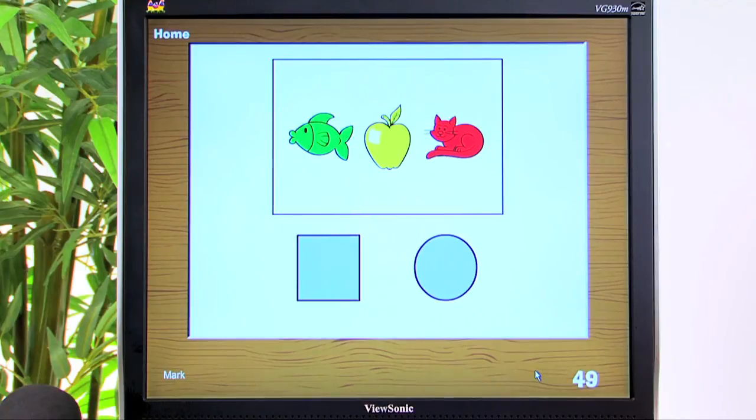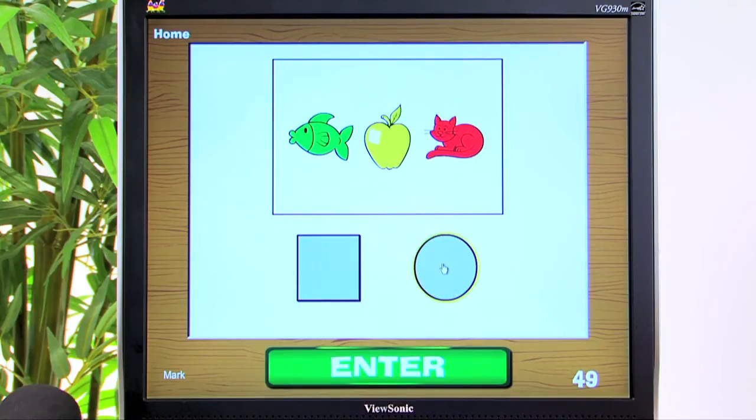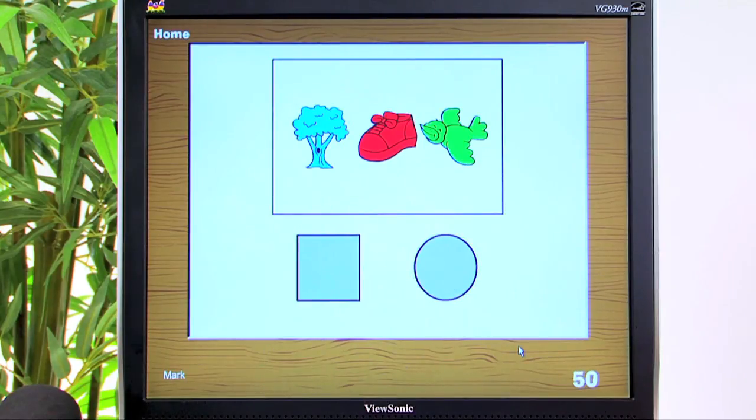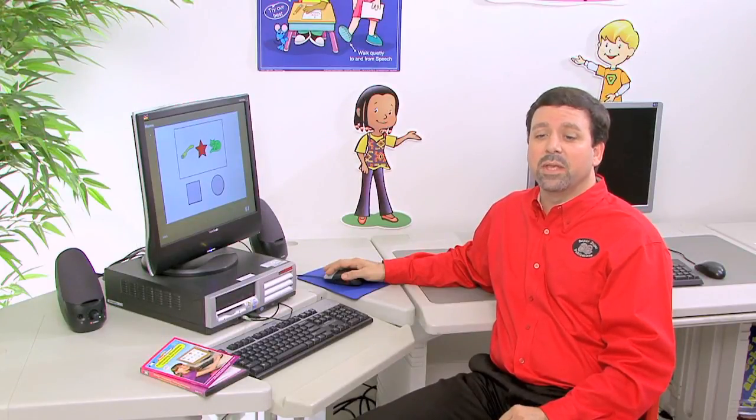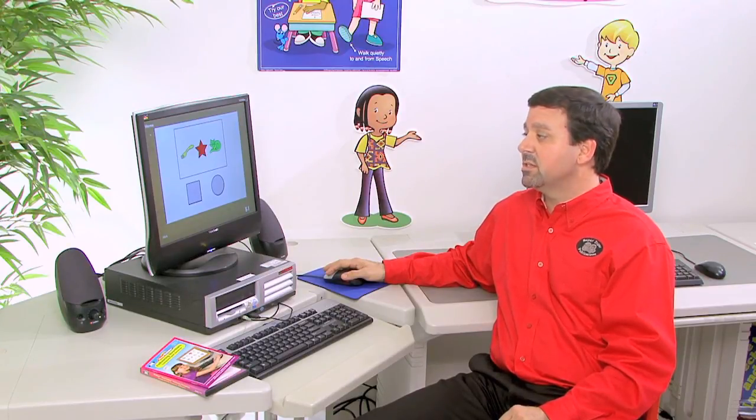If a fish is in the box, click on the circle. If not, click on the square. If a red bird is in the box, click on the square. If not, click on the circle. And those are just a few items from the Conditional Directions subtest.